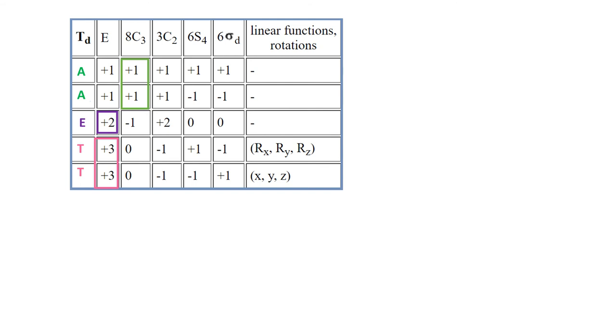Now, to decide if the A's are 1 or 2, we need to look under sigma D, which is vertical with respect to C3. Because notice that C2 is not perpendicular to C3, so it's all logical so far. However, to distinguish between T's, we need to look under S4 improper rotation.